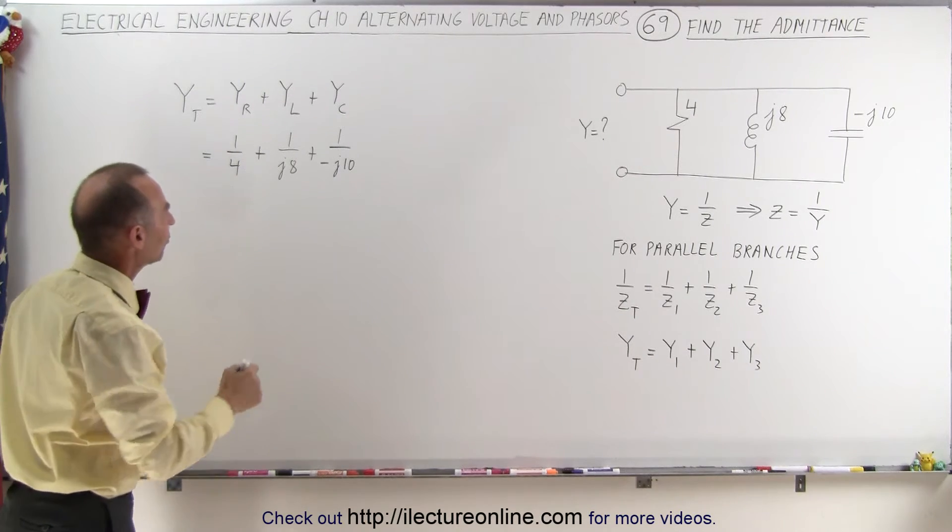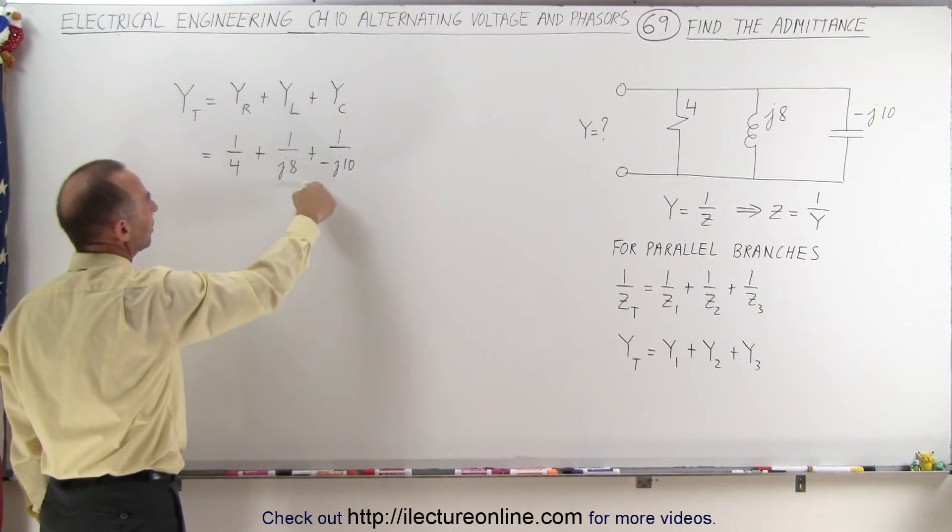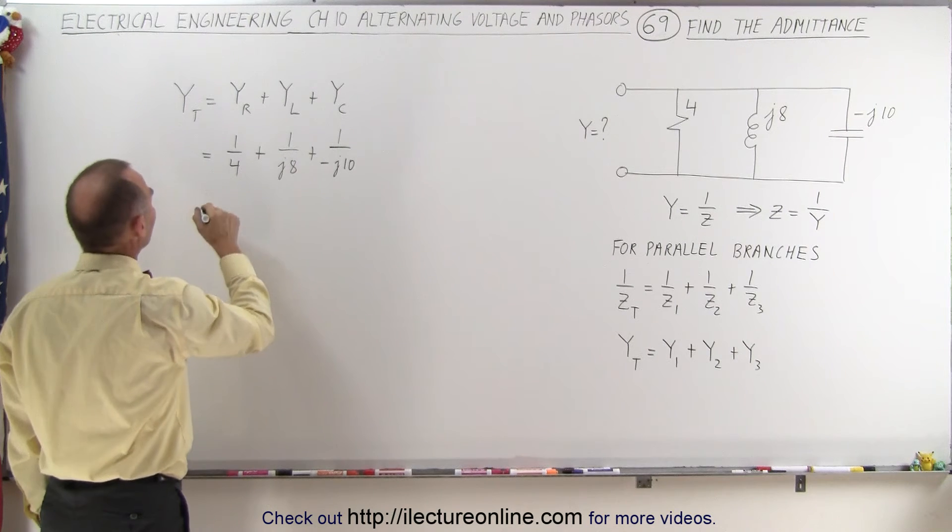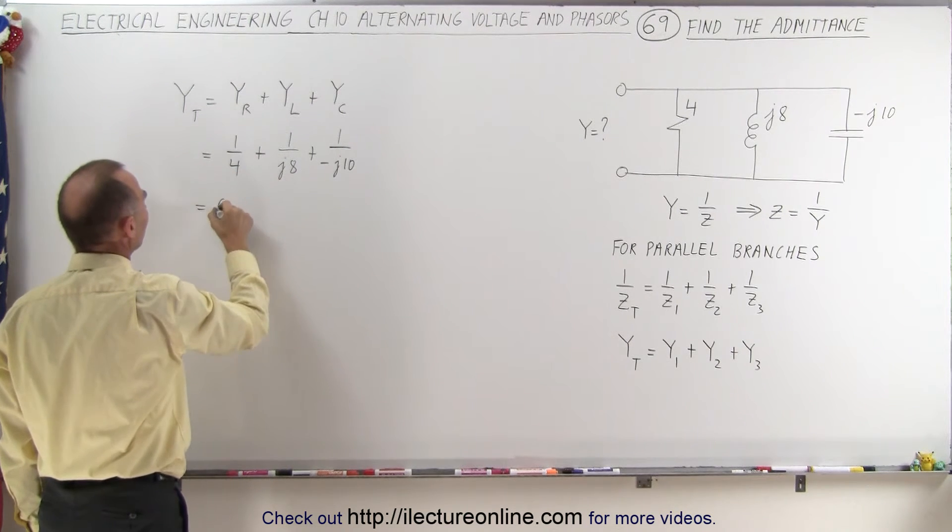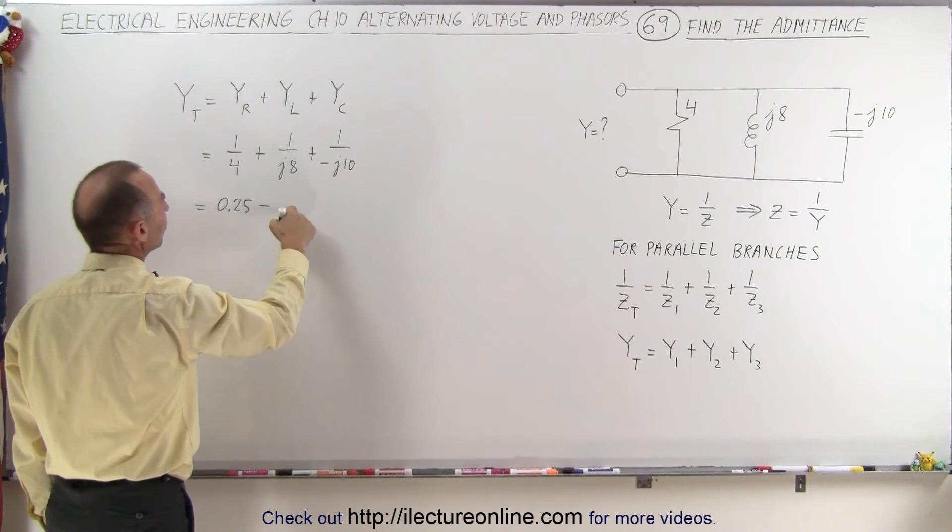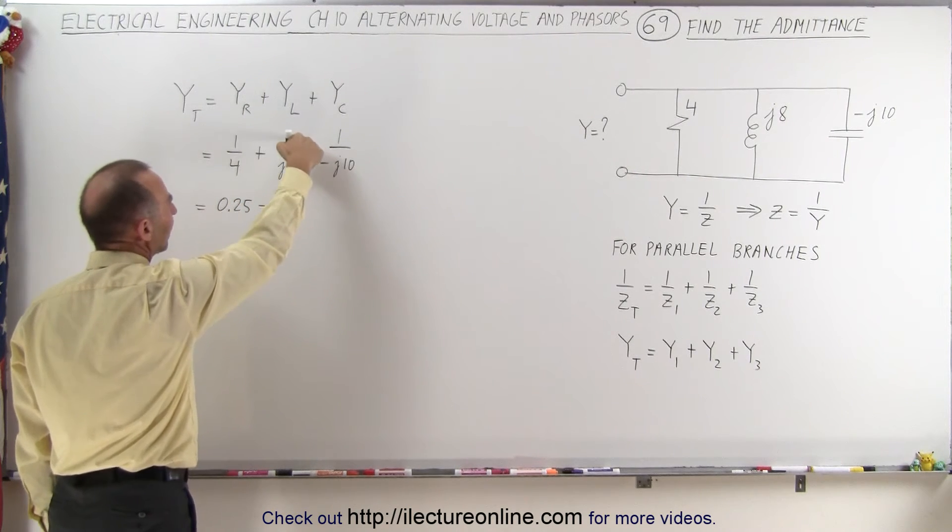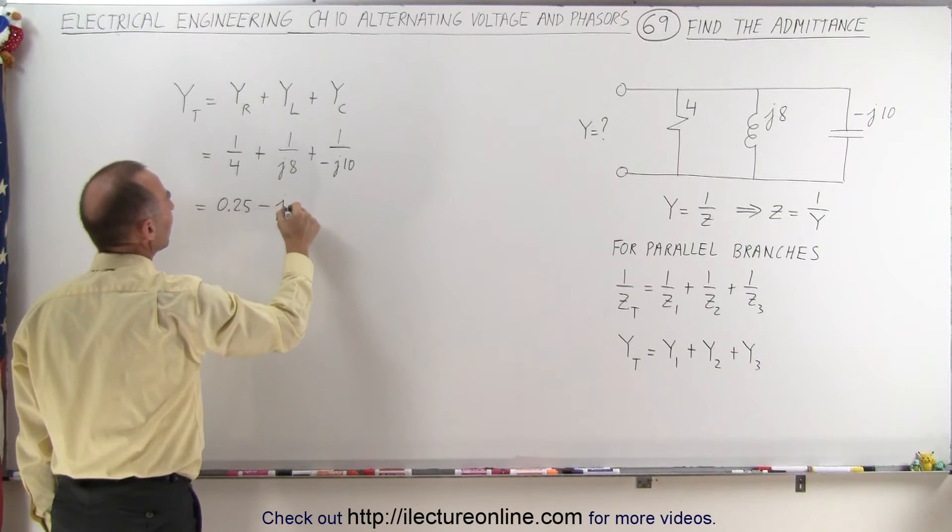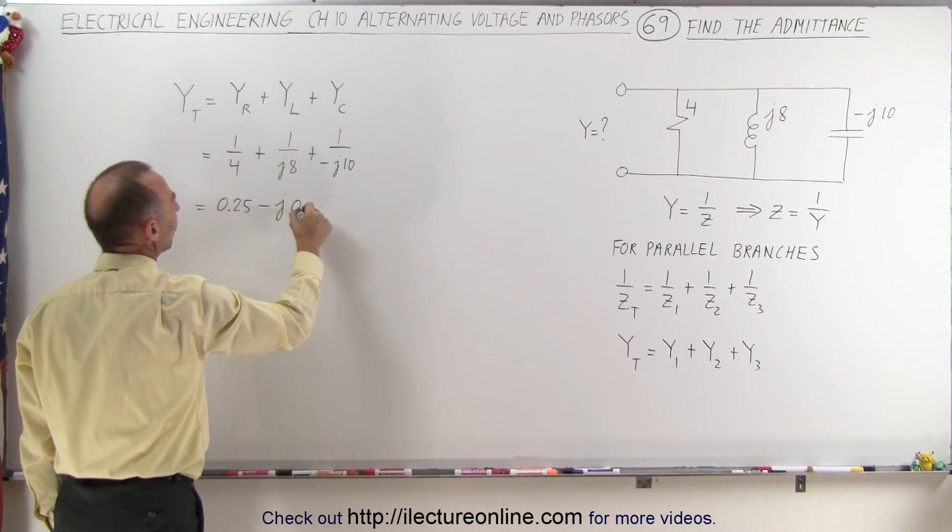Now, what we can do next is we can move the J's to the numerator. And when we do that, this is equal to, well, this would be 0.25, that's 1 quarter, minus, because when we bring the J to the numerator, it becomes a minus J, so minus J times 1/8, which is 0.125.